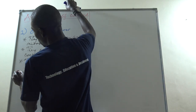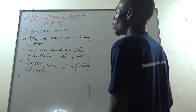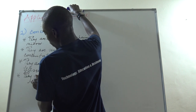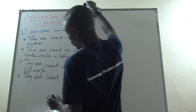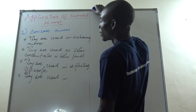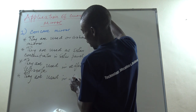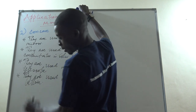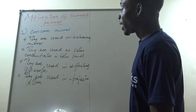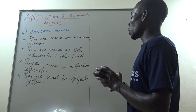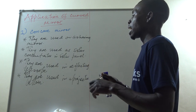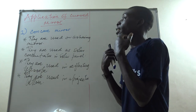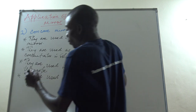Another use of the concave mirror is in a projector lantern. They are used in projector lanterns for concentrating the rays from the light source, which helps in projecting images effectively.